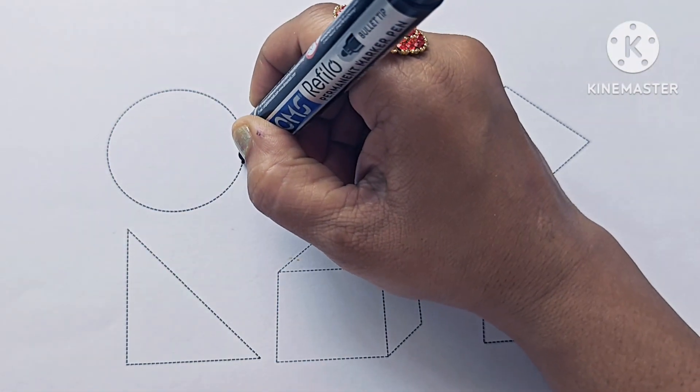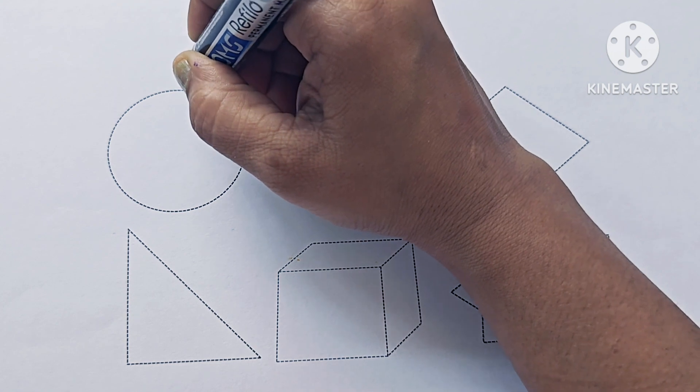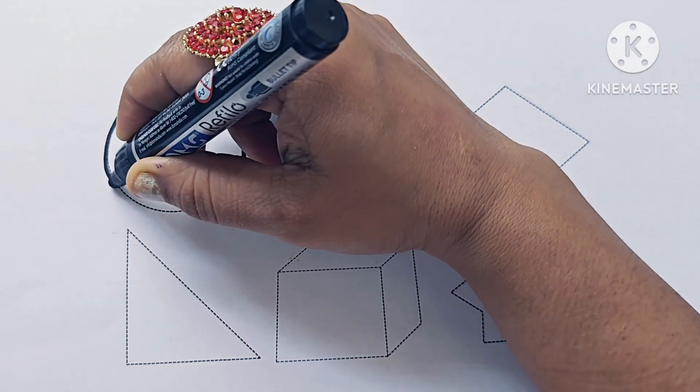This is circle. Circle has no sides. It is a plain surface.